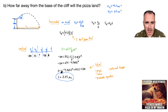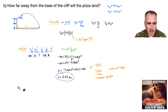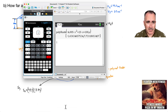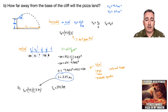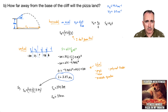Now I can use that in the original equation. Sx = 43.3 times T = 43.3 times 7.73 ≈ 334.7. I'm losing some decimals there, but it's approximately 334.7 meters. To two significant figures, Sx is approximately 330 meters.